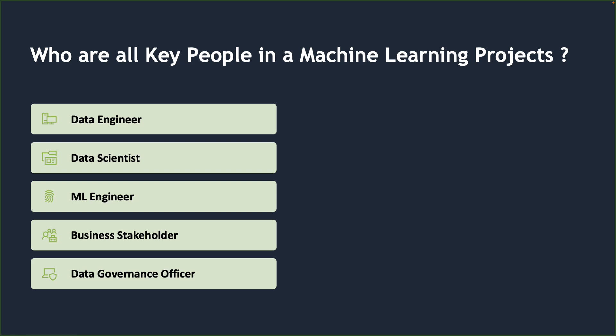MLOps is very important in any project because a machine learning project is made up of people from various teams. Building any machine learning application is a team activity. The data engineer is responsible for building the data pipeline to process, organize, and store data so that machine learning models can be applied, and so that data can be used by downstream applications.